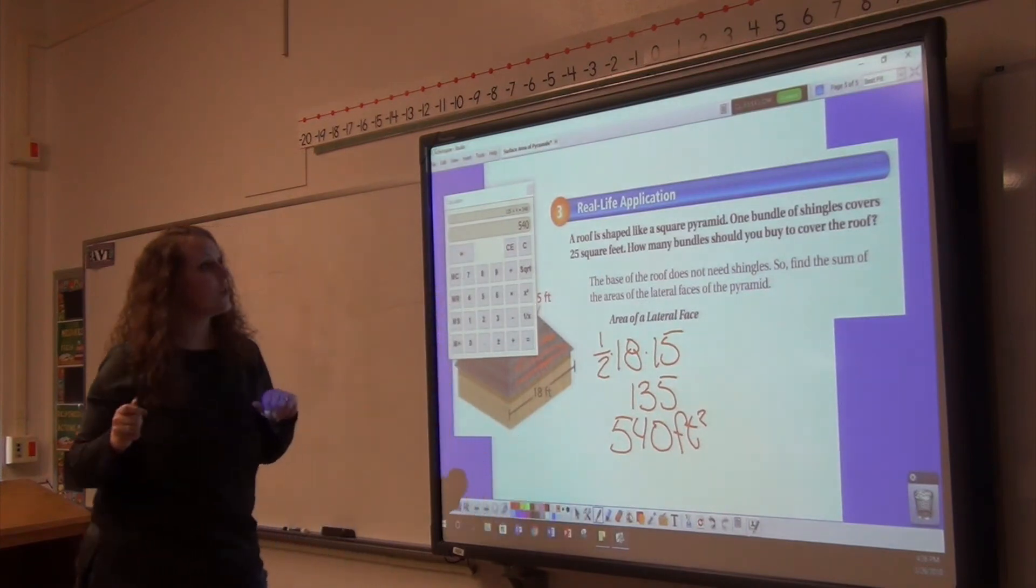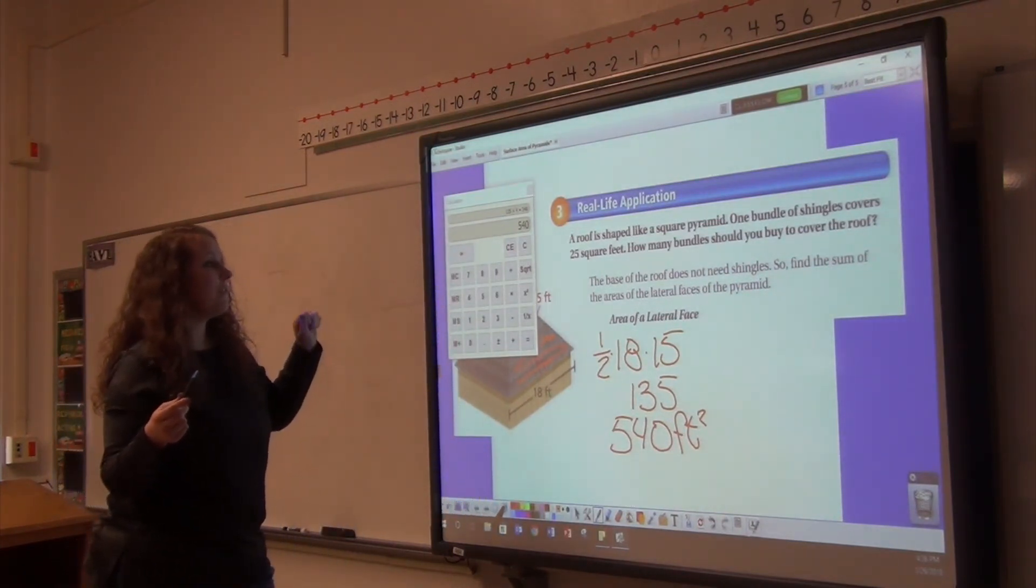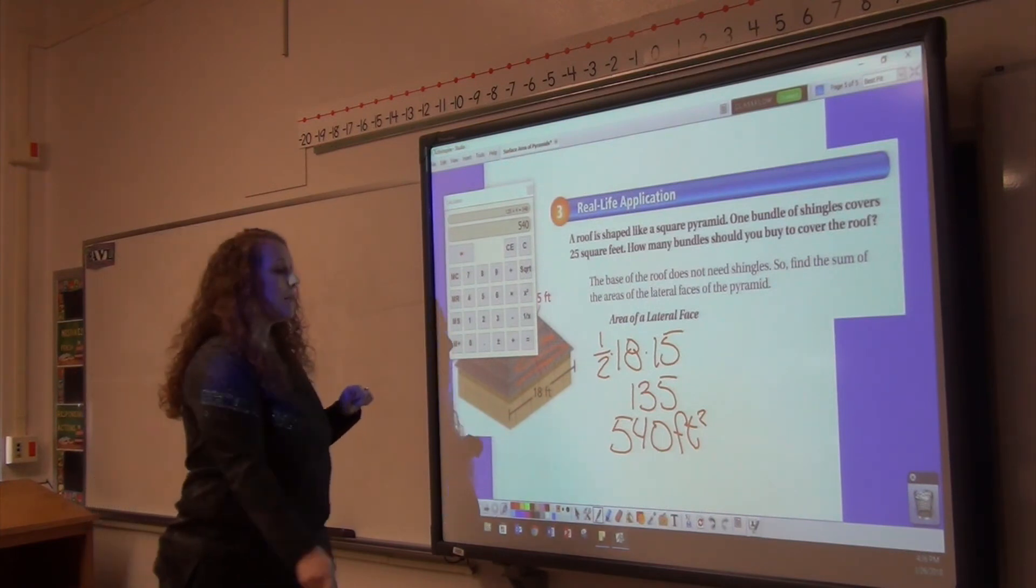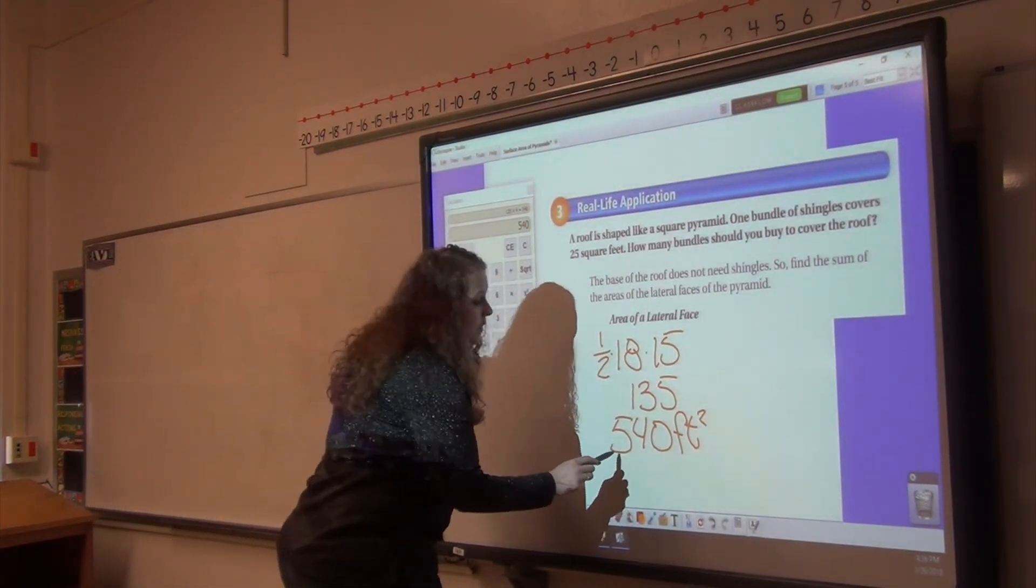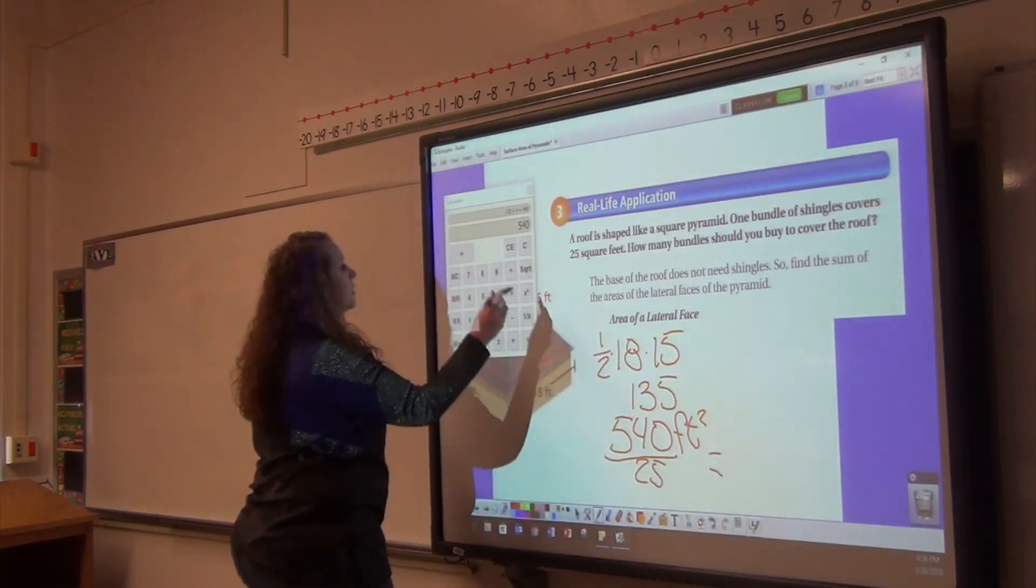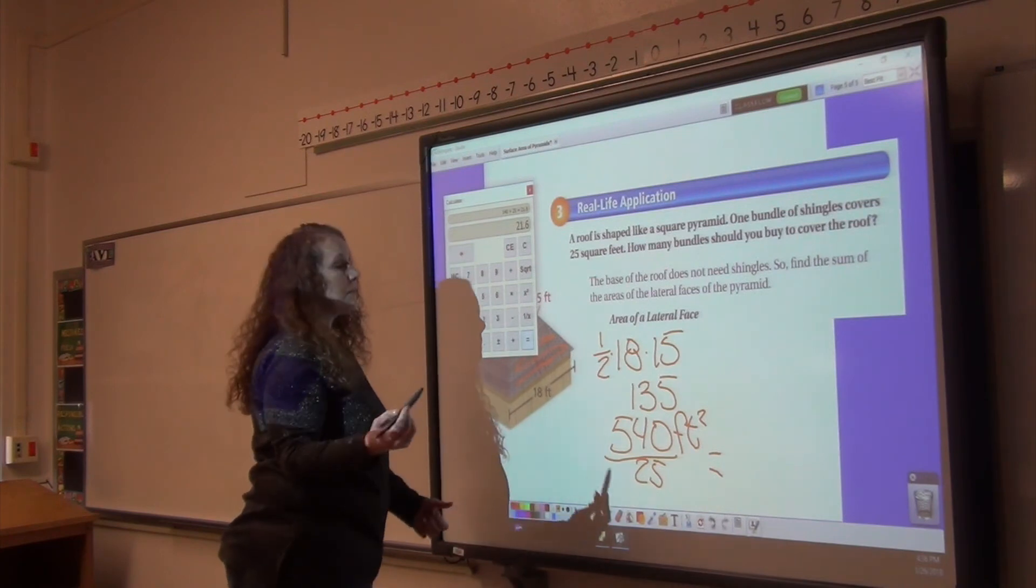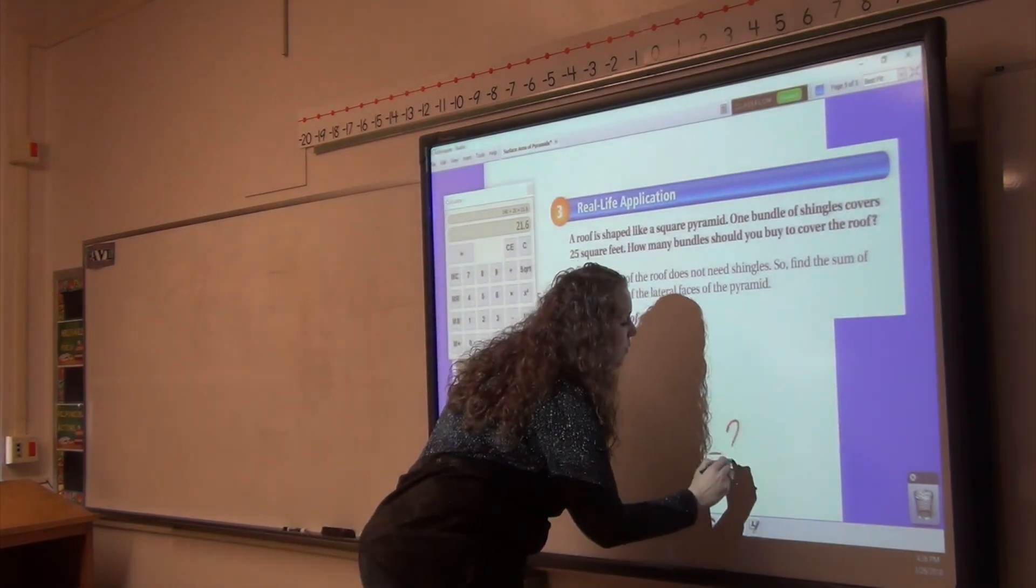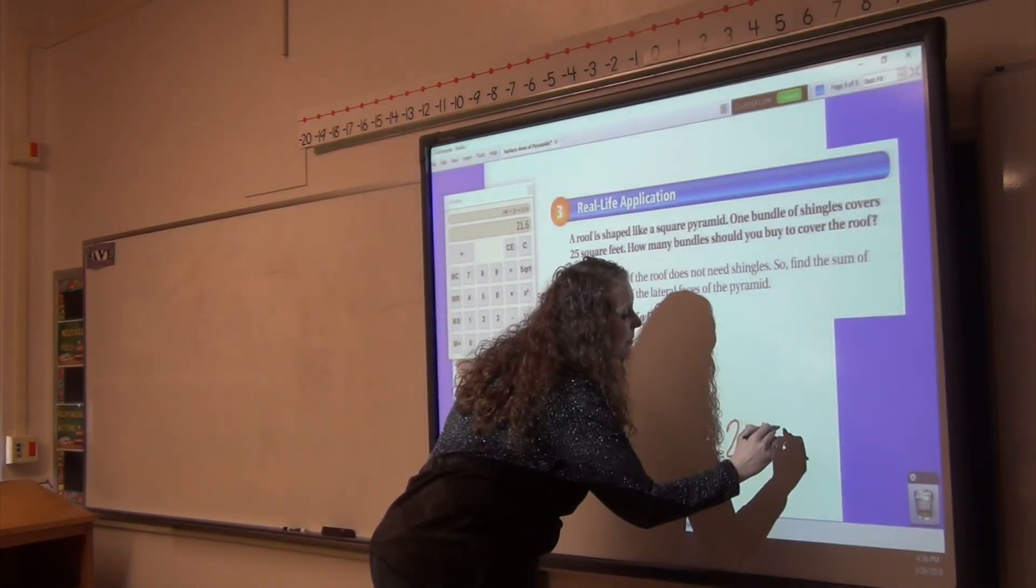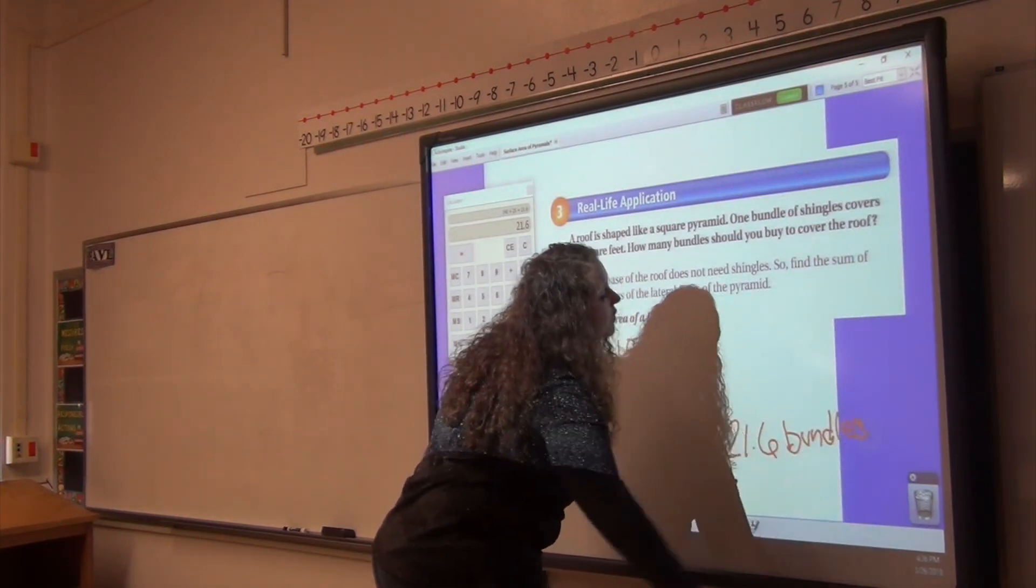That is not the question it asked us, though. It asked us how many bundles we need to buy. One bundle covers 25 square feet, but I have 540 square feet. So if I divide by how much one bundle will do, if I divide by 25, that will tell me how many bundles I need to buy. It is 21.6 bundles of shingles.